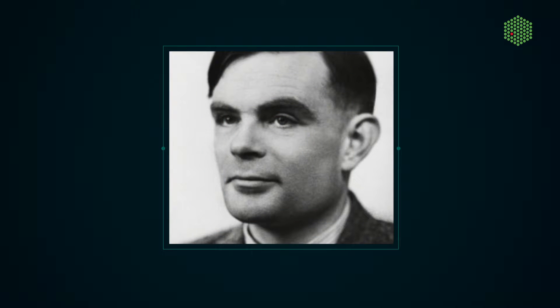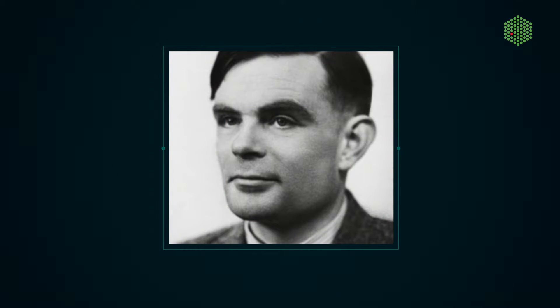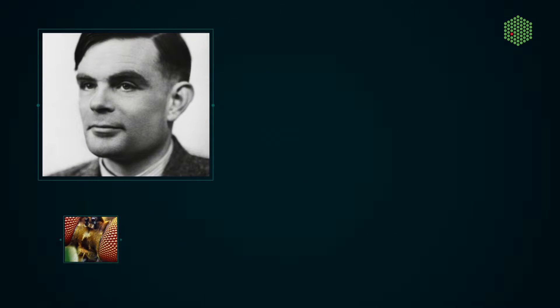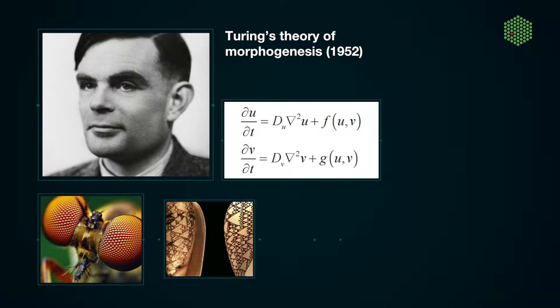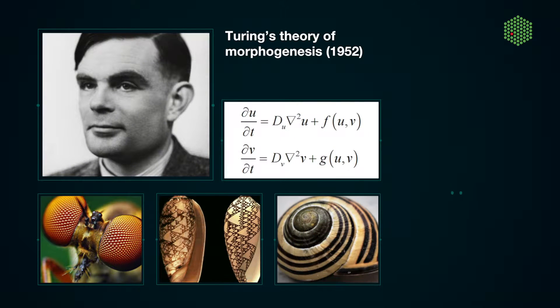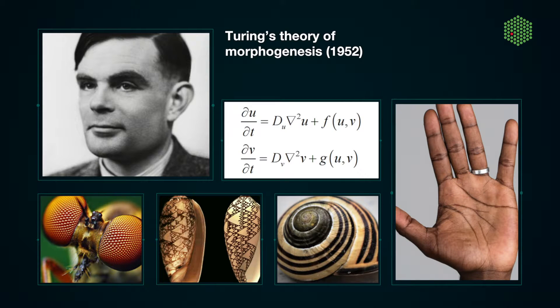Alan Turing was one of the greatest mathematicians of the 20th century. Right before his tragic death, he ventured into theoretical biology and came up with a brilliant theory to explain how patterns might form in nature.